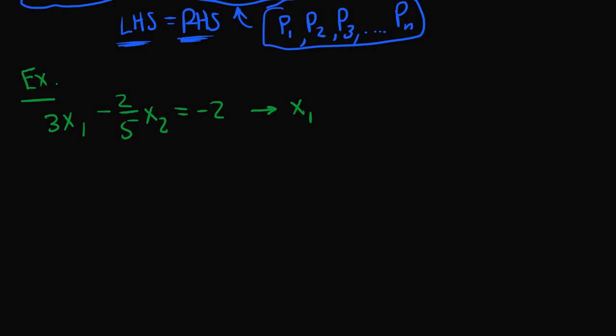The very first thing we could do is add 2/5 x₂ to both sides, and that would essentially bring this over to the right-hand side. So that would be 3x₁ = (2/5)x₂ - 2. And then we could divide by 3 on both sides.